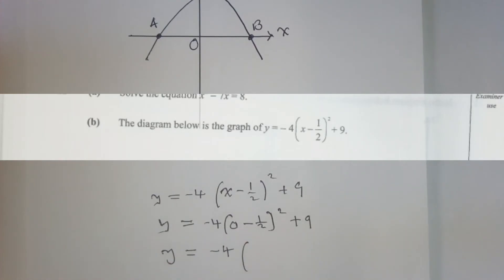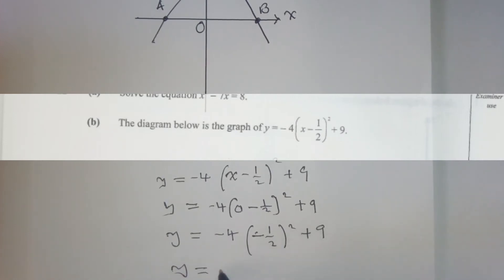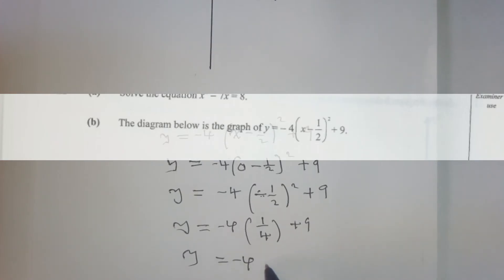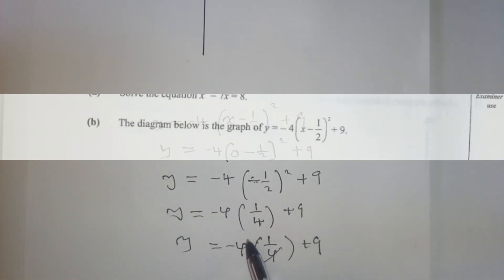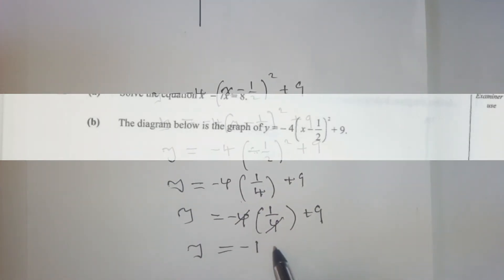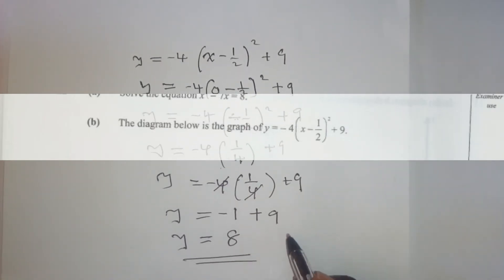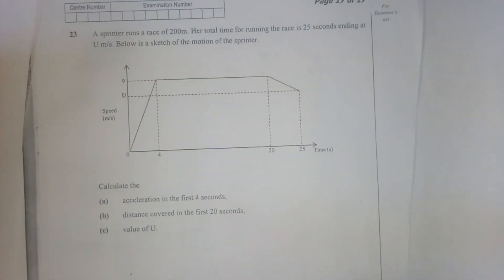Solving: we get negative four times one over four plus nine, which is negative one plus nine, equal to eight. So the y-value is eight, and the coordinates of C are zero comma eight.